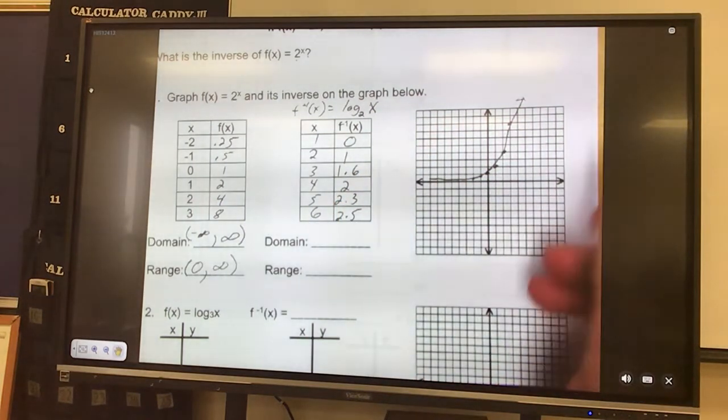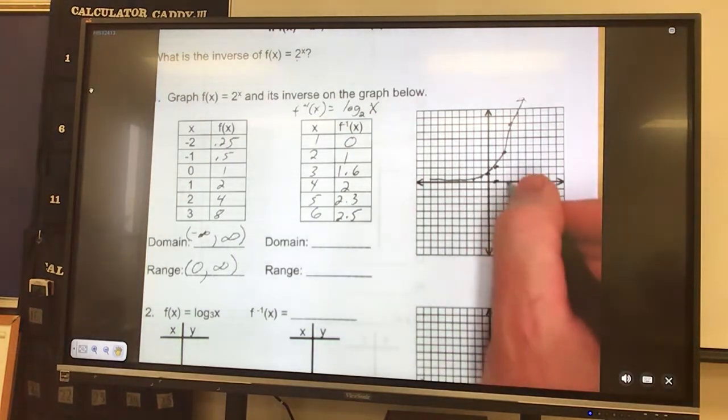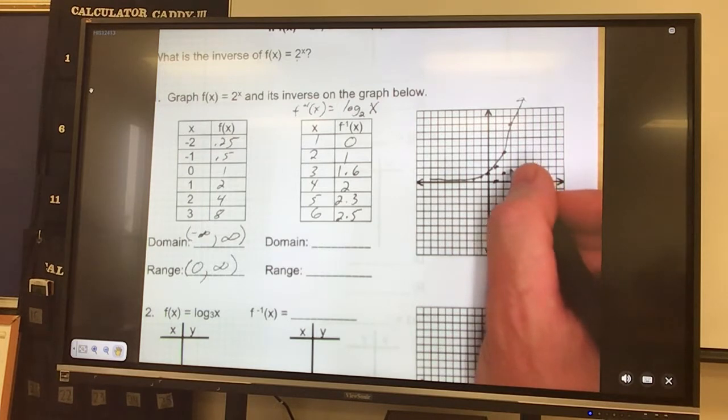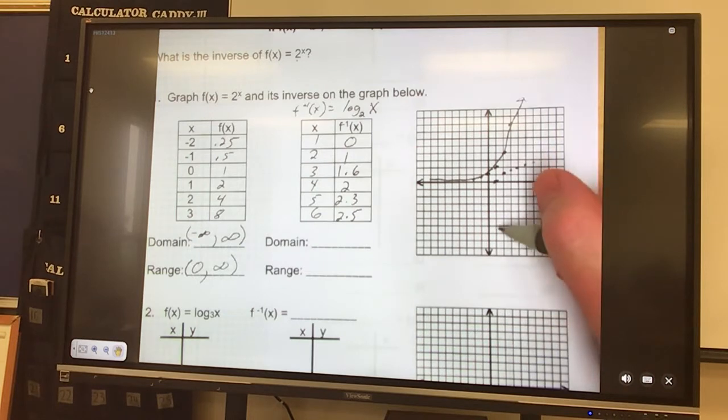So when I go to graph this guy, it's over 1 up 0, over 2 up 1, over 3 up 1.6, over 4 up 2, over 5 up 2.3, and then 2.5.